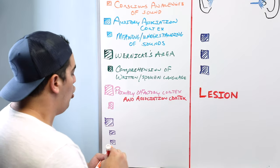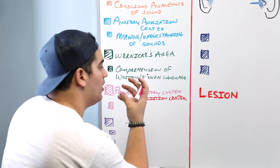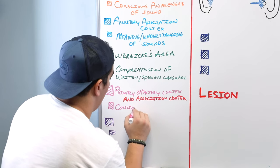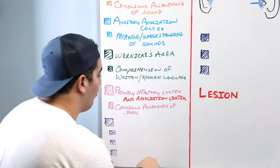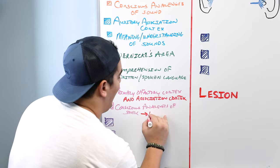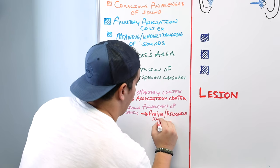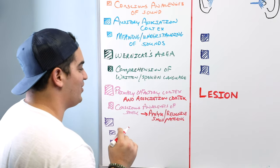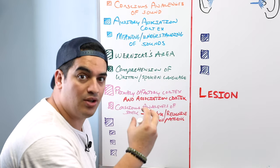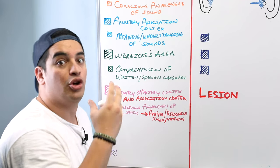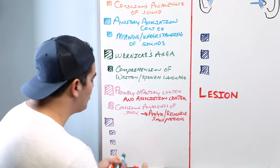The primary olfactory cortex helps us become consciously aware of particular smells. The olfactory association cortex then takes those smells and analyzes them, helping us to recognize smell patterns. Importantly, this association cortex can communicate with our limbic system — so it not only analyzes the smell and recognizes what kind it is, but can connect it with our emotional system, linking smells to good or bad memories.